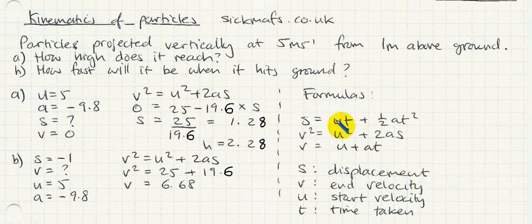So here are the formulas: s equals ut plus half at squared, v squared equals u squared plus 2as, and v equals u plus at. I just have to remind you that v is the ending velocity, and u is the starting velocity, and t is the time taken. And the s is also displacement. Okay, so let's zoom through this stuff.